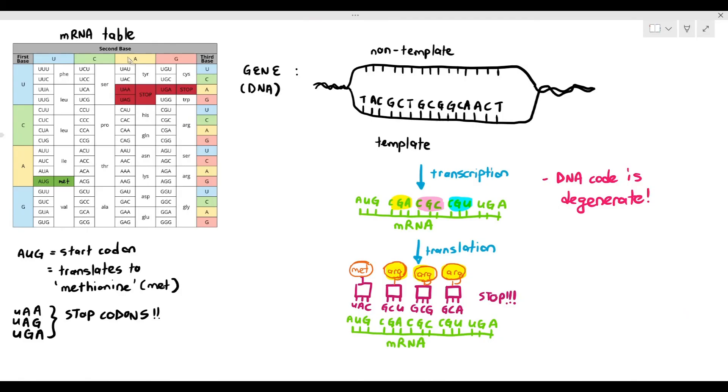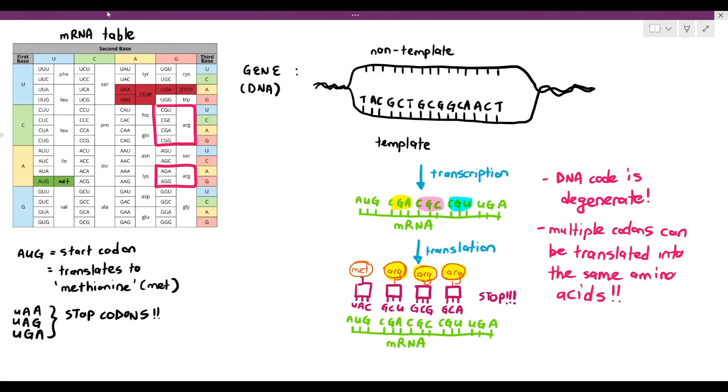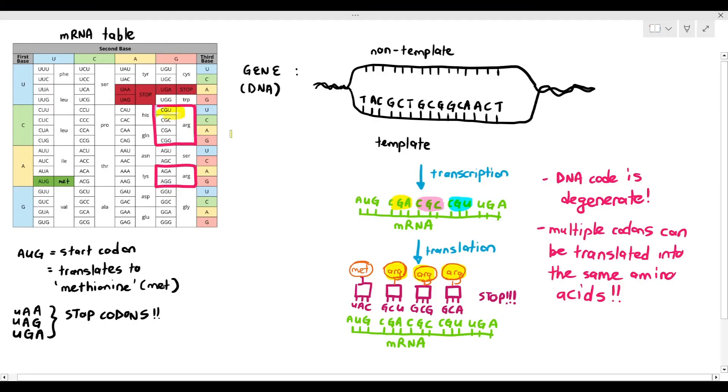For example, the codons CGA, codons CGC, and codons CGU will all translate into the amino acid arginine. So multiple codons can be translated over there, as I've highlighted in the table. So as you can see in the table, where I've just put it in pink squares, you notice that six codons can translate into the amino acid arginine. This is what is meant by the DNA code is degenerate, which means to say it can be repetitive, basically.